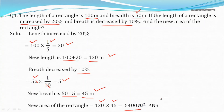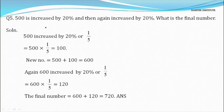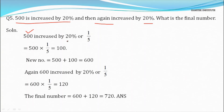Question 5: 500 is increased by 20% and then increased by 20% again. Find the final number. First increase: 20% = 1/5, so 500 × 1/5 = 100. Adding 100 to 500 gives 600 after the first increase.